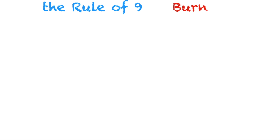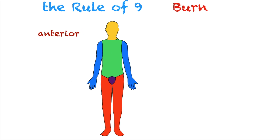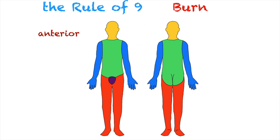The Rule of Nines is a tool that medical professionals use to estimate the total body surface area of a patient affected by a burn. It's called the Rule of Nines because the percentage of the surface area are products of nine. So we have our anterior and posterior parts of the body, both covered by skin, and the Rule of Nines divides the body into sections assigned as percentages.